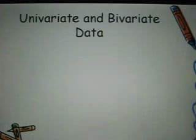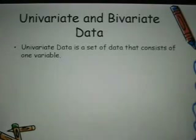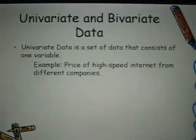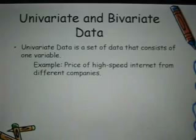Let's take a look at univariate and bivariate data. Univariate data is a set of data that consists of one variable. For example, the price of high-speed internet from different companies.